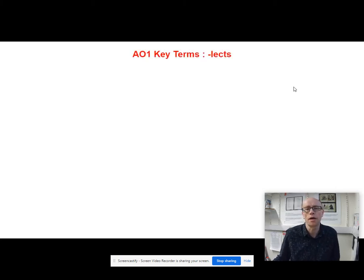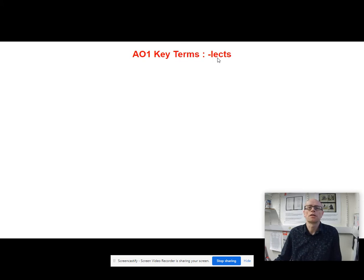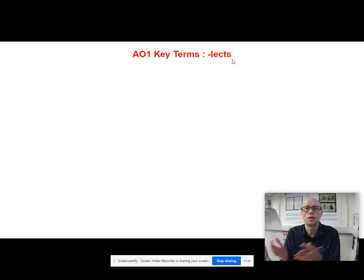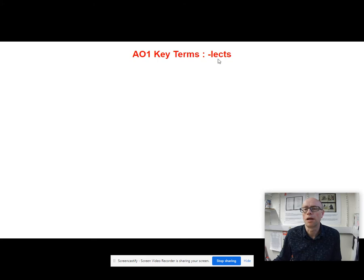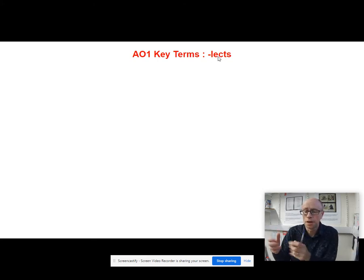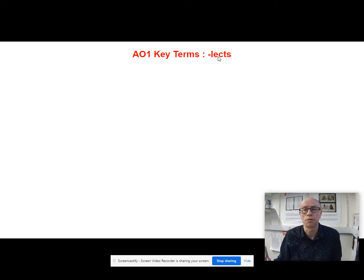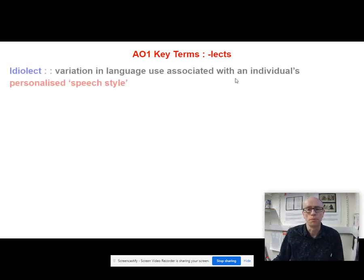Let's start off with some A01 terms. A word that's got 'lect' on the end as a suffix means it's the language of that particular thing. 'Lect' is a bound morpheme - a bit of a word that has to be attached to the main part of the word.